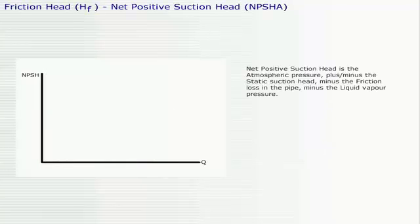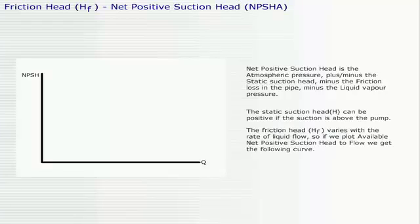Net positive suction head is the atmospheric pressure, plus or minus the static suction head, minus the friction loss in the pipe, minus the liquid vapor pressure. The static suction head can be positive if the suction is above the pump. The friction head varies with the rate of liquid flow. So, if we plot available net positive suction head to flow, we get the following curve.